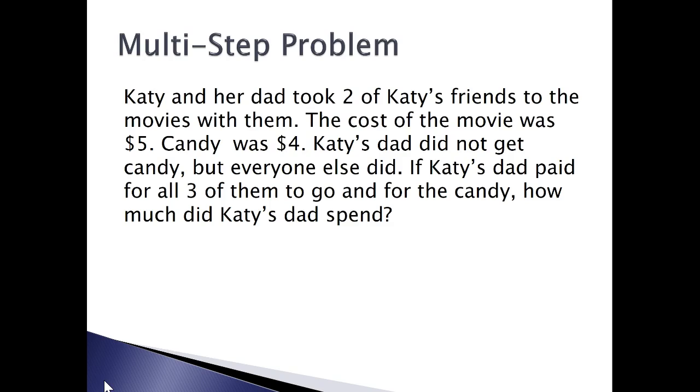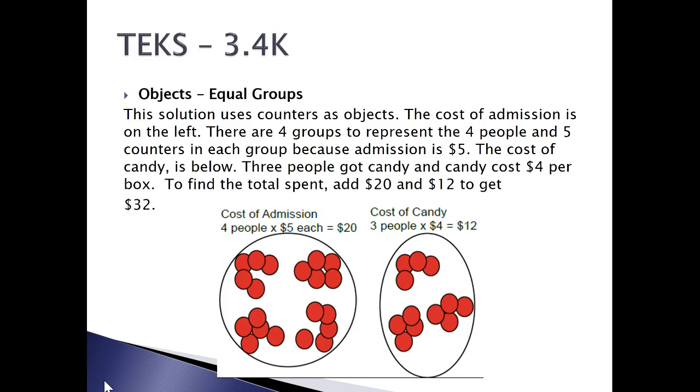Here's the problem. Katie and her dad took two of Katie's friends to the movies with them. The cost of the movie was five dollars. Candy was four dollars. Katie's dad did not get candy, but everyone else did. If Katie's dad paid for all three of them to go and for the candy, how much did Katie's dad spend? Here's an example of taking this problem and using equal groups. We have four people times five dollars each. We're using the two-sided counters with five in each group. Notice there's four groups because there's four people. Then we have three people at four dollars each. Therefore, we have our three groups representing three people with four in each representing four dollars.